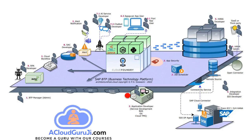Then comes the application developer, who is kind of a hero in this picture. They are mainly developing applications and services using the Cloud Application Programming Model in Business Application Studio, maintaining code-based versions and collaborating with others using Git, then developing and deploying applications in Cloud Foundry runtime, and also responsible for application service security using App Router and XSUAA-based microservices.